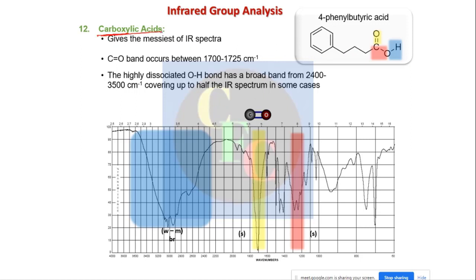Carboxylic acids are another important class. They have a carbon-oxygen double bond (carbonyl), a carbon-oxygen single bond, and an oxygen-hydrogen single bond. The O–H band is very broad because the O–H is highly dissociated through hydrogen bonding. The more acidic the hydrogen, the broader the peak. This very broad band from roughly 2500 to 3300 cm⁻¹ is a characteristic indicator of carboxylic acids.